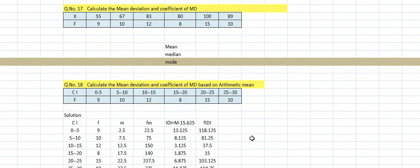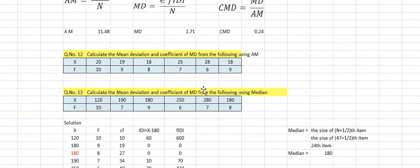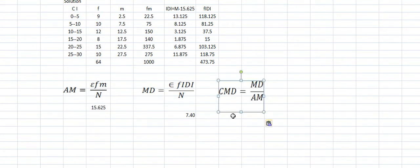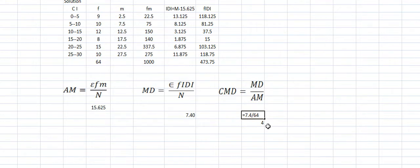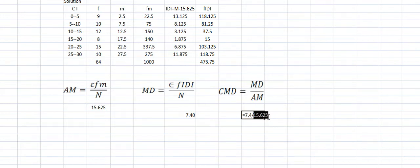The mean deviation comes to 7.4. The coefficient of mean deviation based on mean = mean deviation divided by arithmetic mean = 7.4 divided by 15.625 = 0.47. This completes question number 18 based on the arithmetic mean.